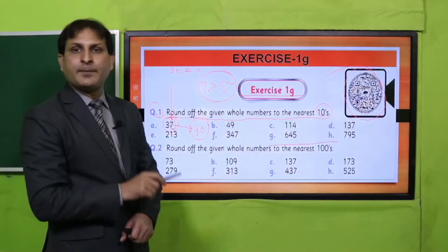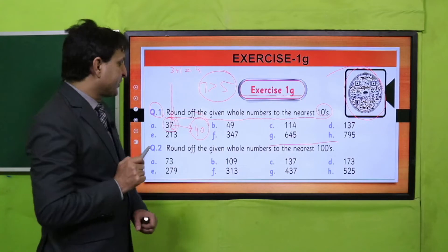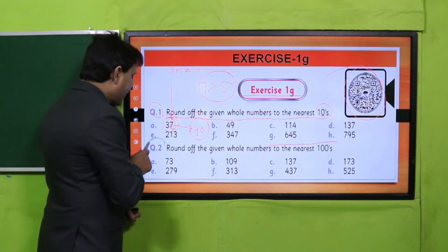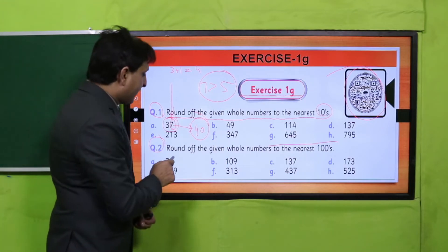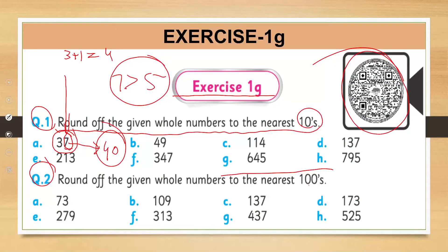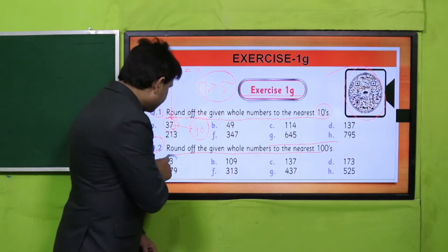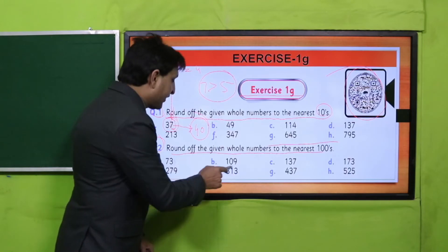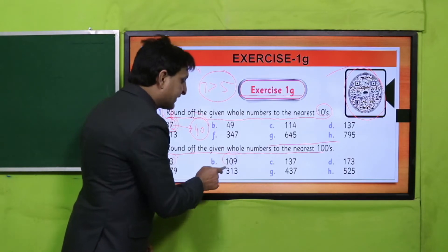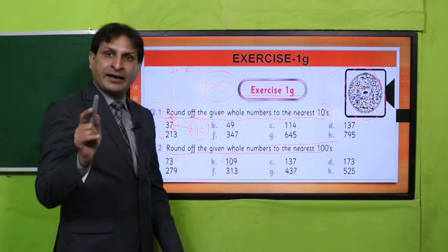اب آجائیں question 2 کی طرف۔ Question 2 میں کیا کرنا ہے: round off the given whole numbers to the nearest hundreds۔ آپ نے یہ جو whole numbers given ہیں — یہ three digits بھی ہیں، two digits بھی ہوں گے — ان کو nearest hundred پر round off کرنا ہے۔